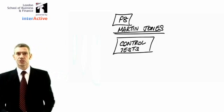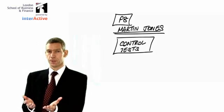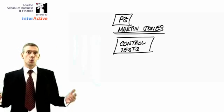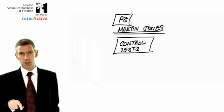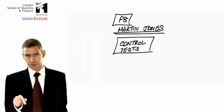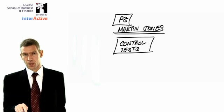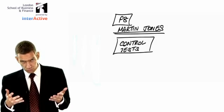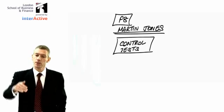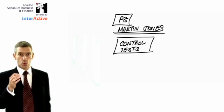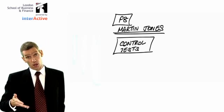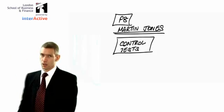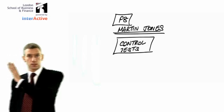Picture yourself in the exam. You're sitting there, you open up the paper, the examiner says here's a system — design control tests. What you do is go into the scenario and extract the controls that she gives to you. Then you take her controls and you test them. For example, she tells you in her scenario that all purchase order notes are authorised. The control is: all purchase order notes are authorised. That's the control — you're going to test it.